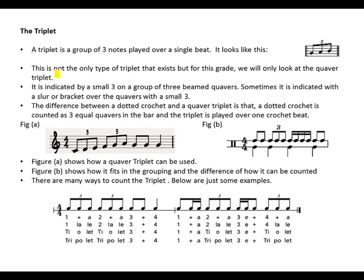Now we go look at the triplet. What is a triplet? A triplet is a group of three notes, says the wall. Triple means three. A group of three notes played over a single beat. This is how it looks like. A triplet, it will have a small 3 on top of three beamed quavers. This is not only the type of triplet that exists, but for this grade, we will only look at the quaver triplet.